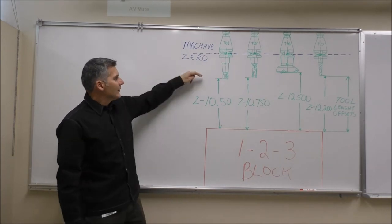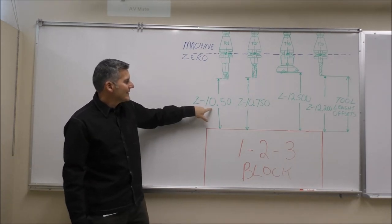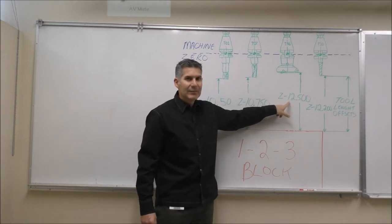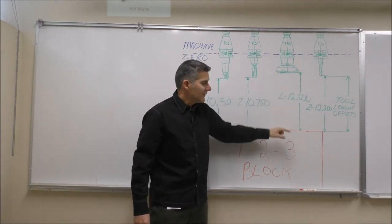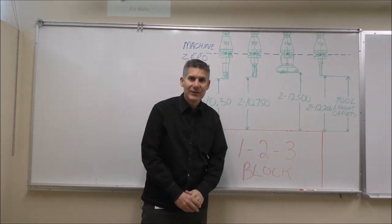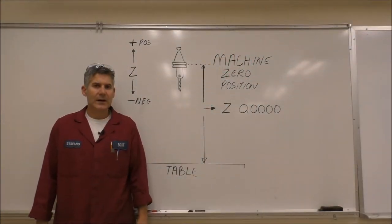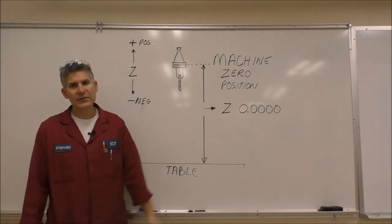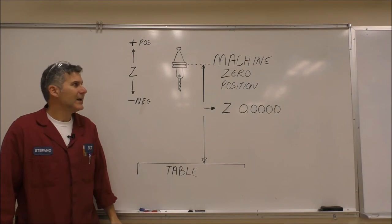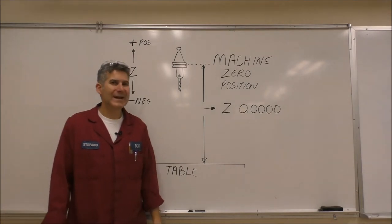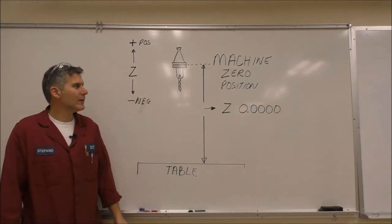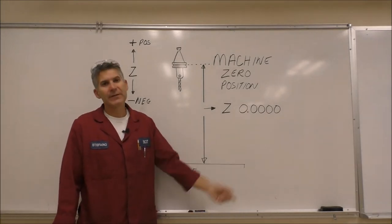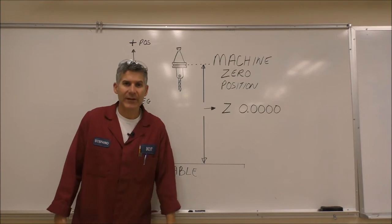You can see here the longest tool will be minus 10.5 and the shortest tool will have a larger negative number — it has to travel more in the negative direction to contact the 1-2-3 blocks. I want to talk about the machine zero position, or the machine home position. This is where the machine will home against its limit switches. It's a very accurate and repeatable origin, which is why we use it as a reference point for measuring our tool length offsets.